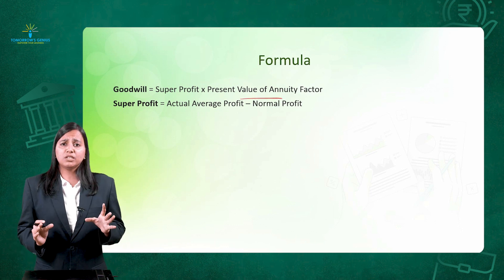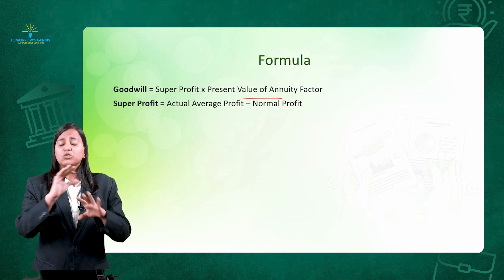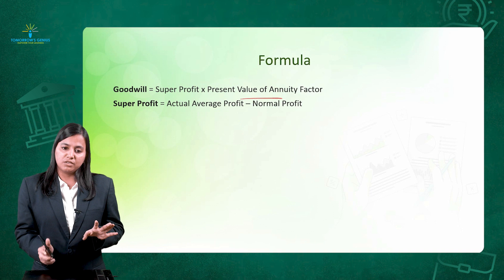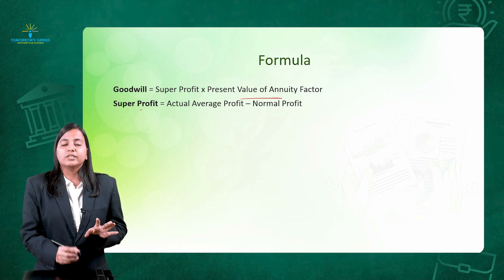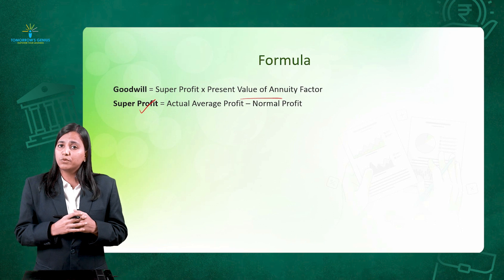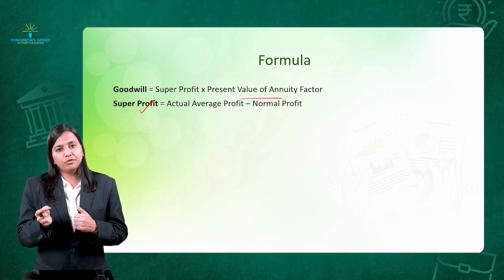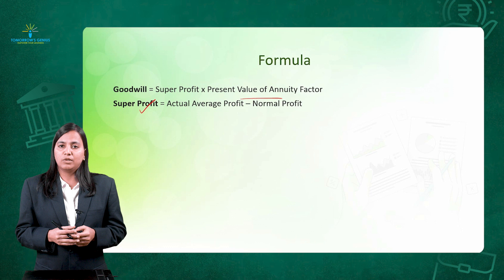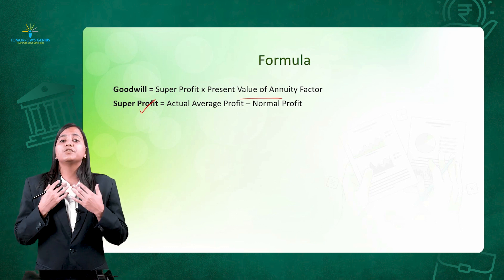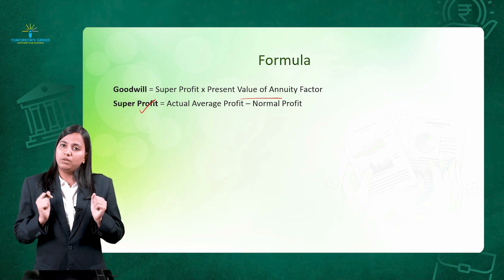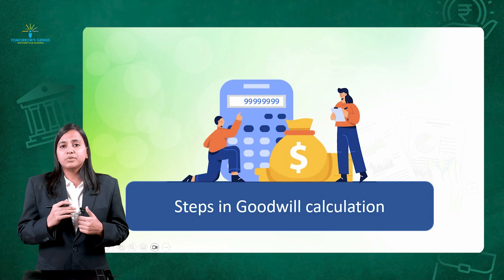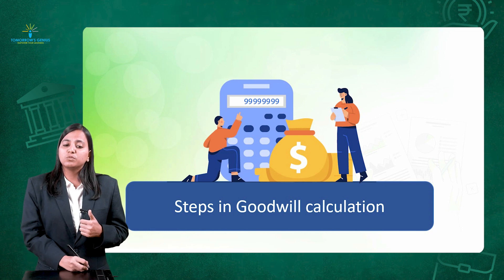This present value annuity factor you do not need to calculate — it will be given to you in the question. The super profit formula, which we covered in the last video: super profit equals average profit minus normal profit, because super profit is the excess profit earned over normal profit.